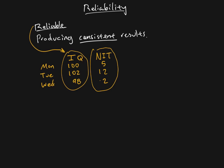With both of these tests, we have some variation. Even with our reliable test, there's not a lot of variation, so we're calling it reliable. Reliable doesn't mean it has to give exactly the same results — it means it has to give mostly the same results. You are rarely going to get a measure that gives exactly the same results from day to day. The question is why — why are the scores not exactly the same? The answer is because of what we call error.